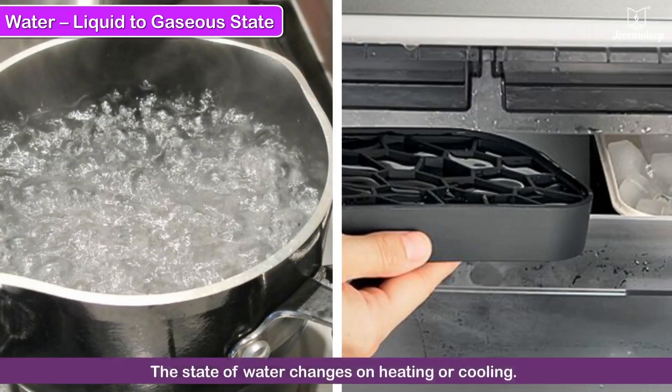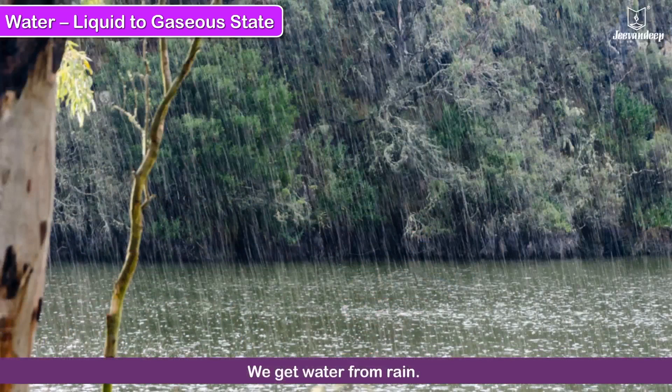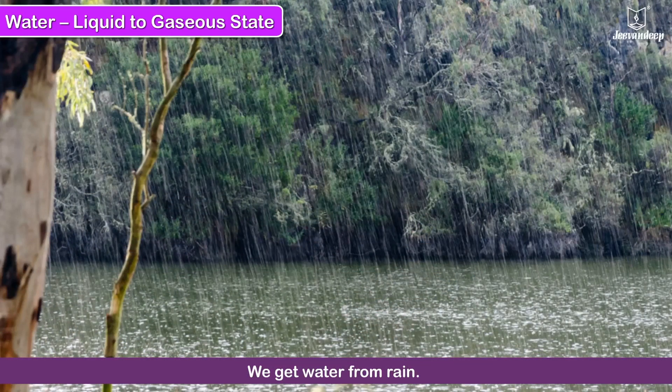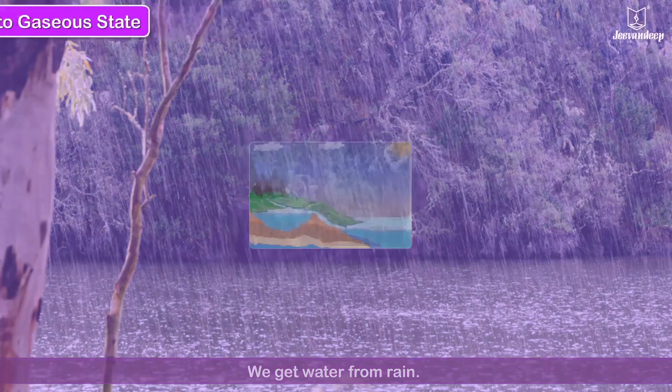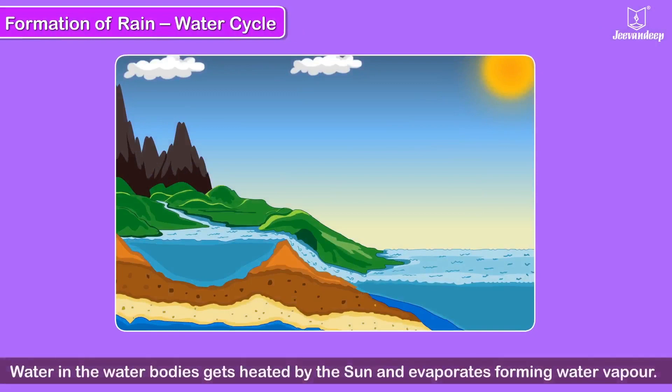Thus, the state of water changes on heating or cooling. We get water from rain, but where does the rain come from? Water cycle: Water in the oceans, seas, rivers, and lakes gets heated.